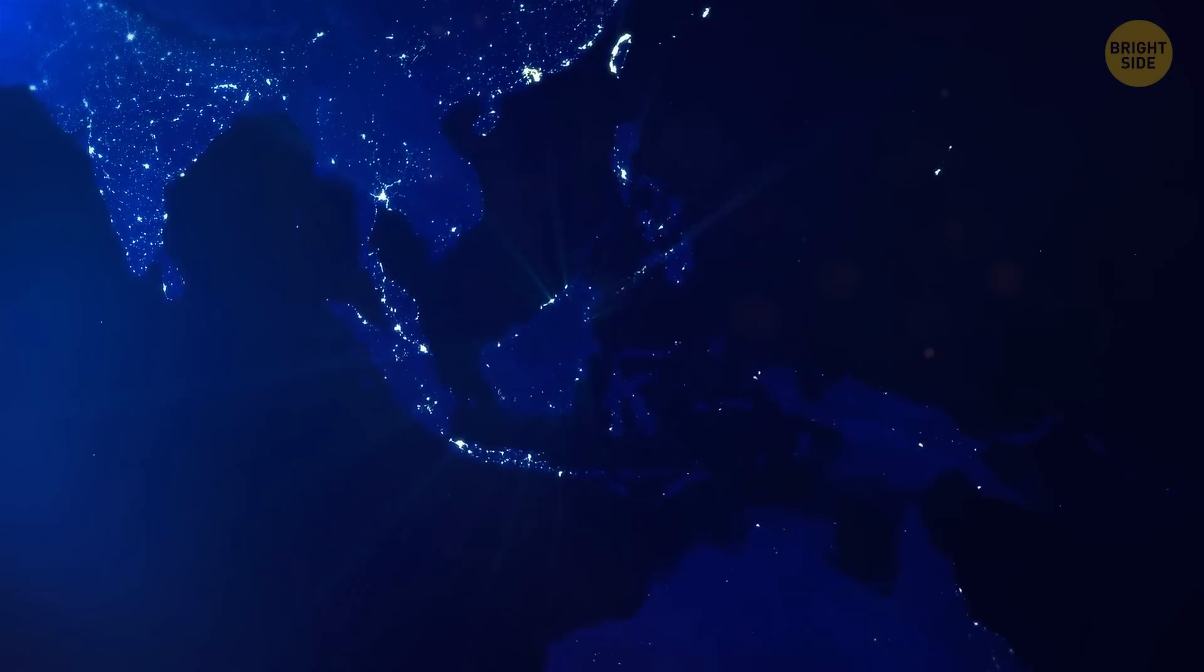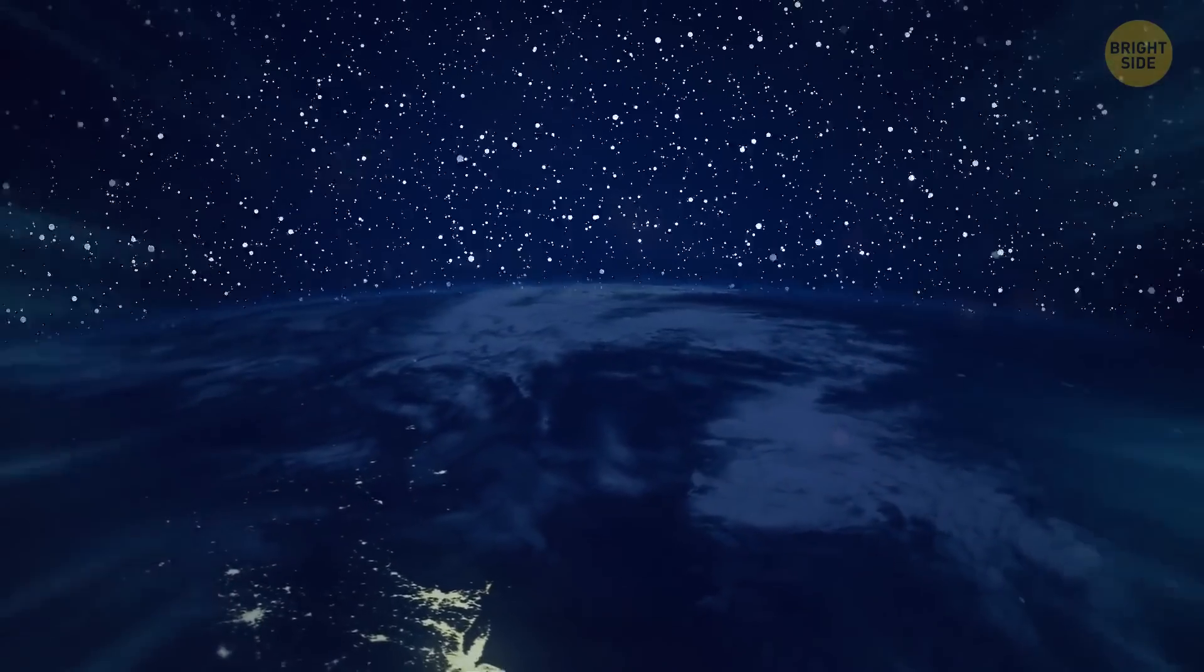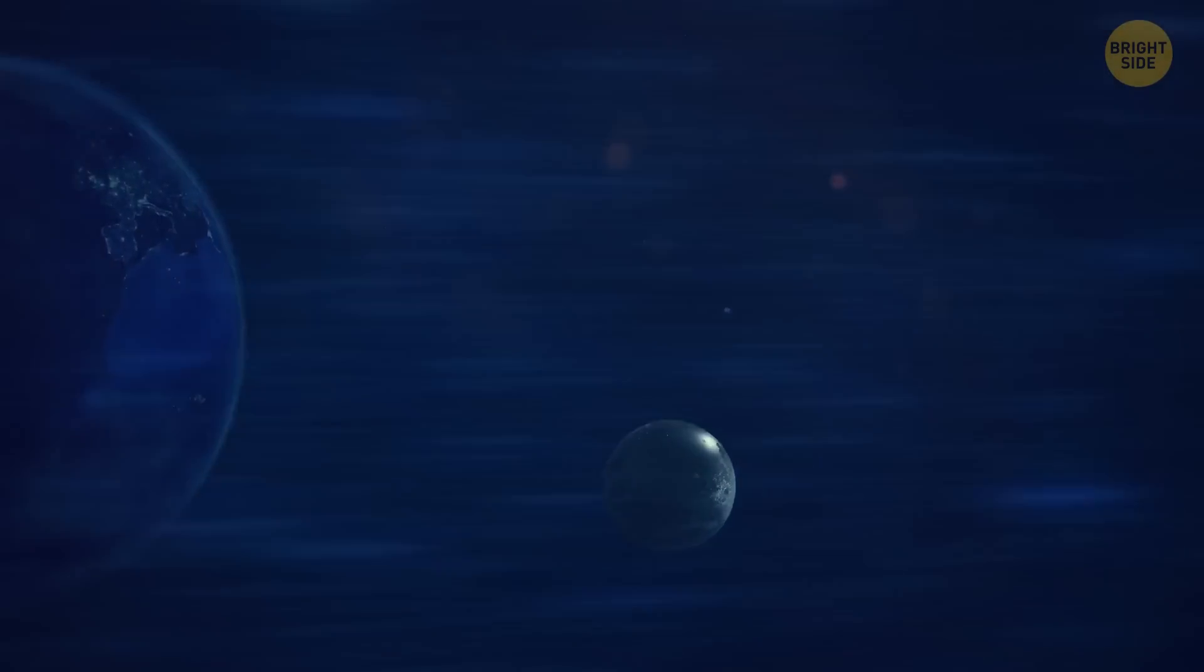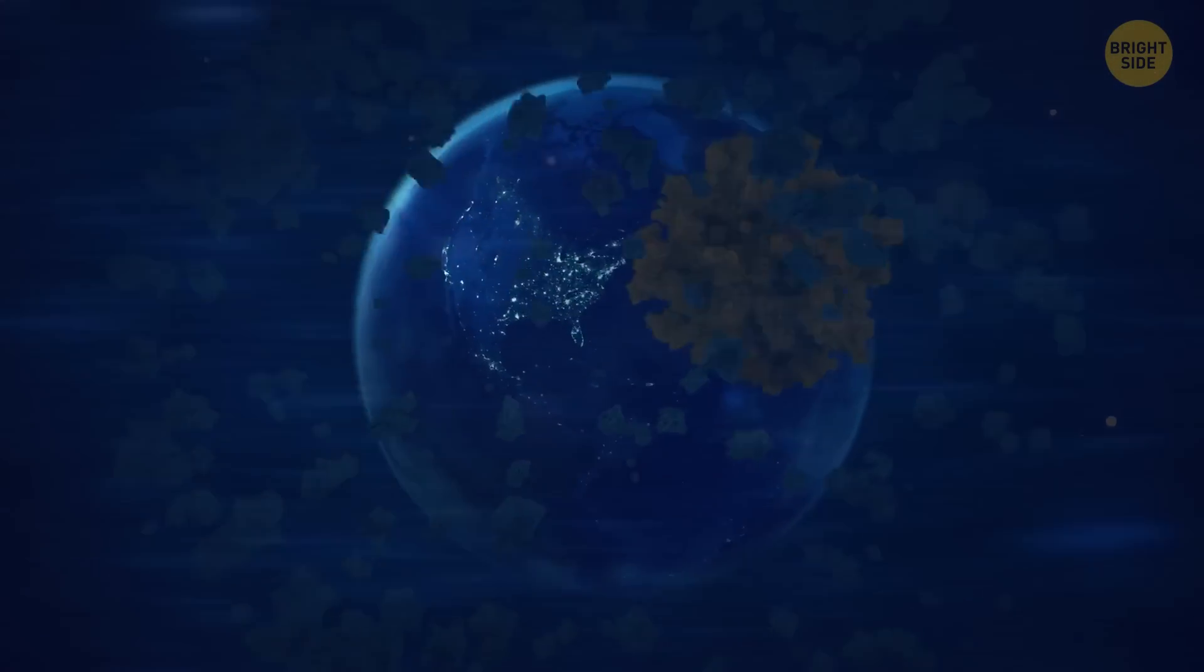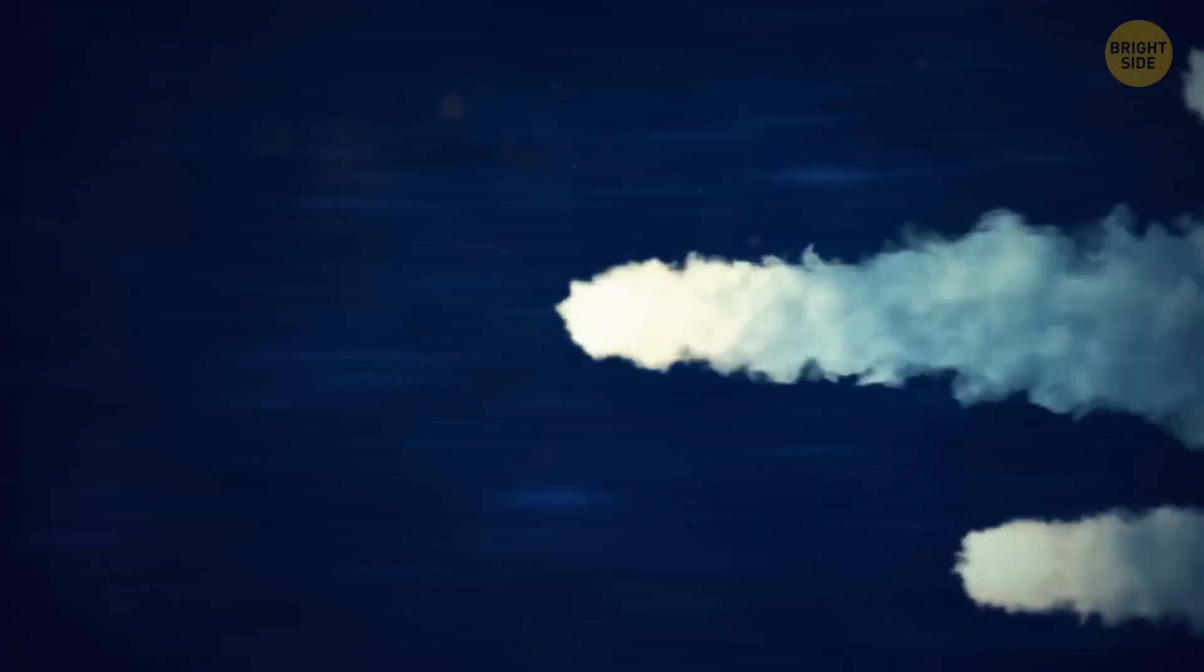Our planet would still be dark. We would be flying through space at an unusual speed. The planet wouldn't rotate on itself, and many objects would crash into us. We'd be in the trajectory line of mass comets waiting to strike us down.